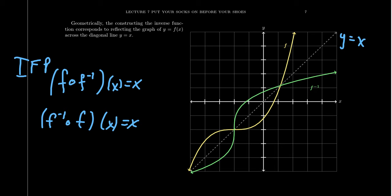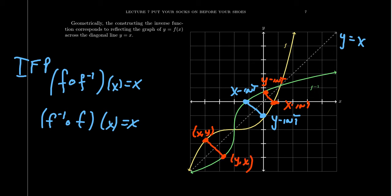What's happening here is that the roles of x and y are reversed. For example, if you take the x-intercept of this function and reflect it to the other side, you get a y-intercept. So the y-intercept of f corresponds with the x-intercept of f inverse. If you take any point (x, y) and reflect it across the line, you get the point (y, x) — the coordinates are switched.